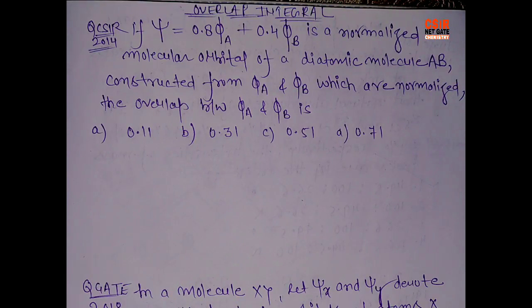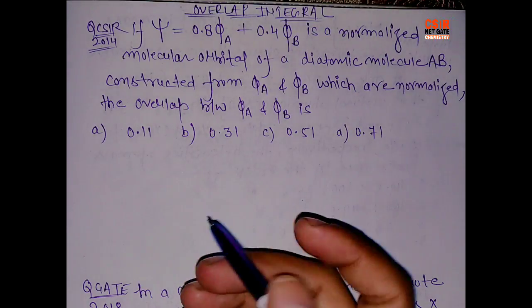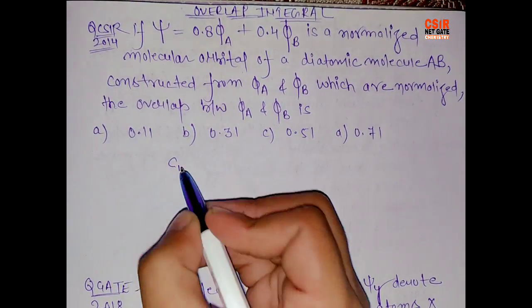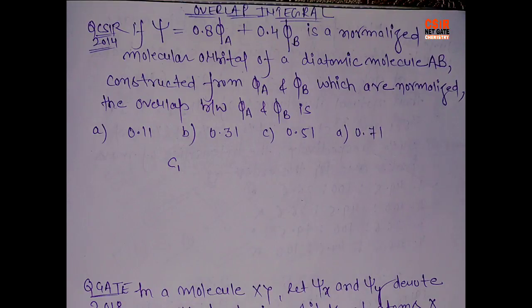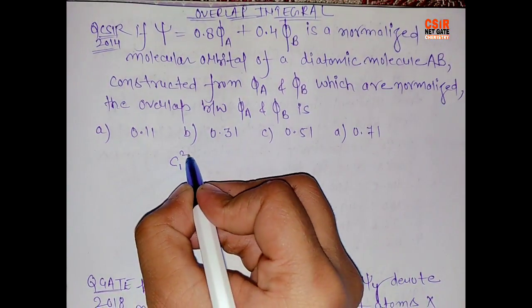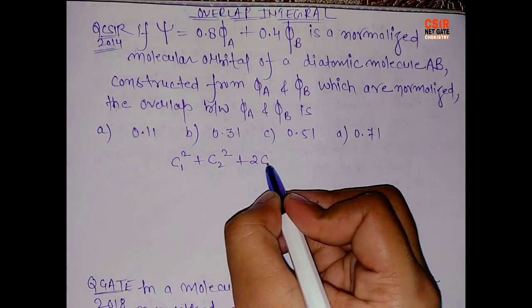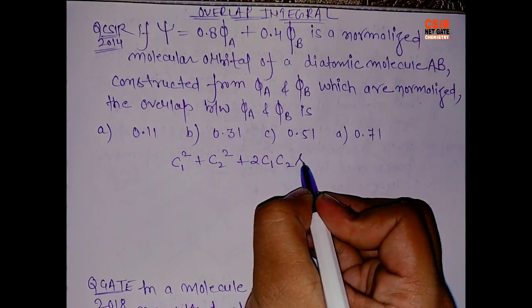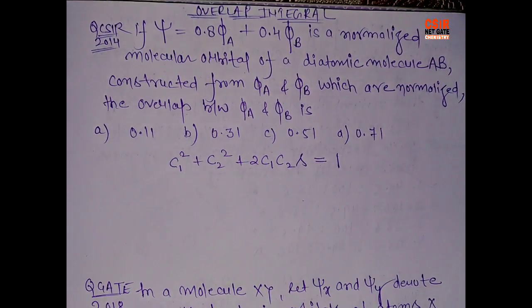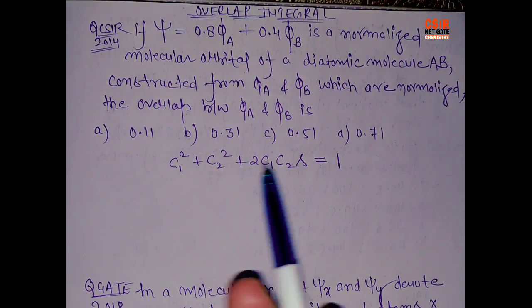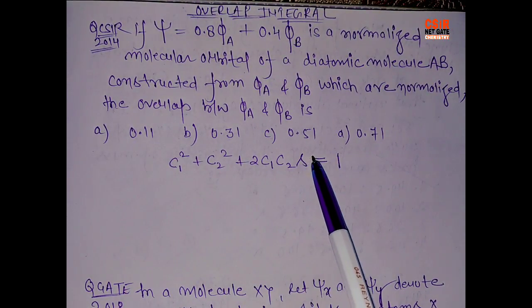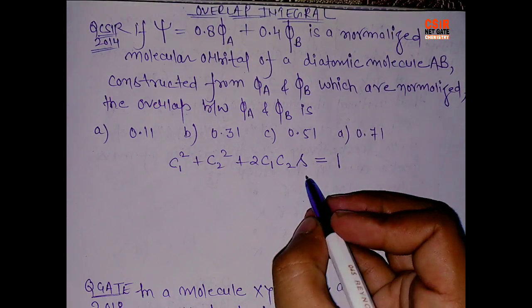So let's start. The formula is: c1 square plus c2 square plus 2c1c2s equals to 1. Now basically it's a plus b whole square, and additionally we have s here. So this s is nothing but the overlap integral.